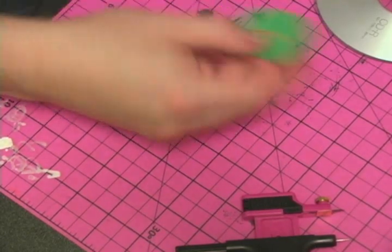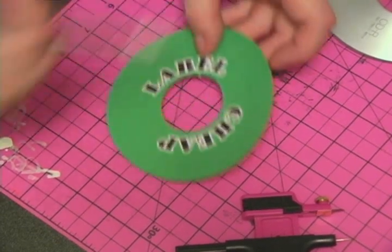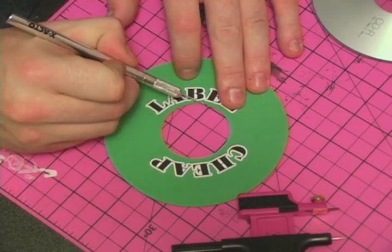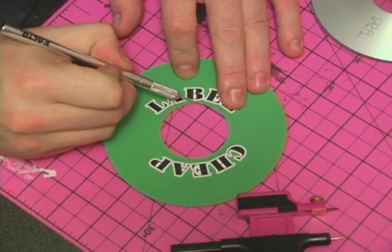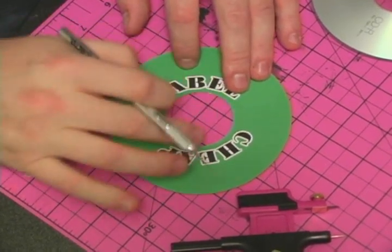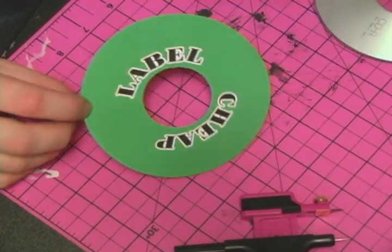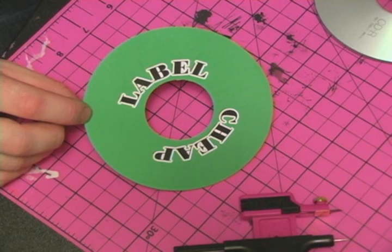What I do if I get what I call a little doodad on there - just take an Exacto knife and go ahead and cut that off. Do a little fine-tuning on it. Now we have a cheap label and I'm going to show you how to apply this label with some spray adhesive.